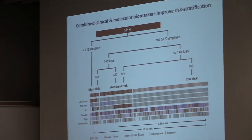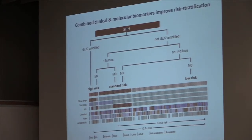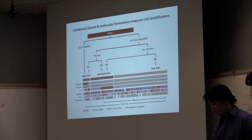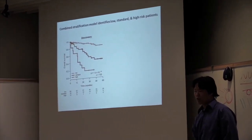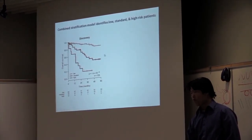And indeed, we can. Using both molecular subgroup typing and looking for genetic markers that are specific to the subtype, we can stratify this subgroup of medulloblastoma patients into three risk groups. And these risk groups exhibit drastically different survival, both in the discovery cohort.